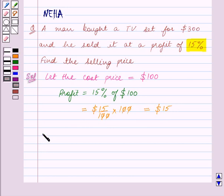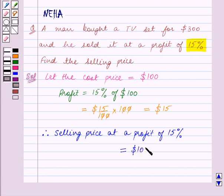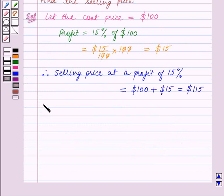Therefore, selling price at a profit of 15% is equal to the cost price which is $100 plus the profit which is $15. So we get when cost price is $100, selling price is $115.